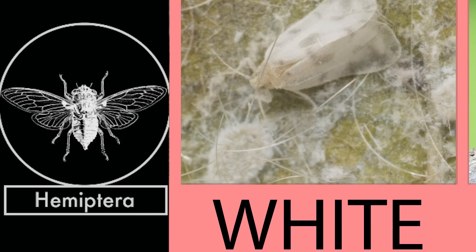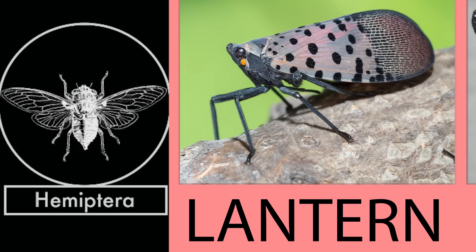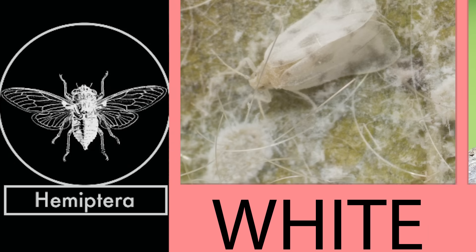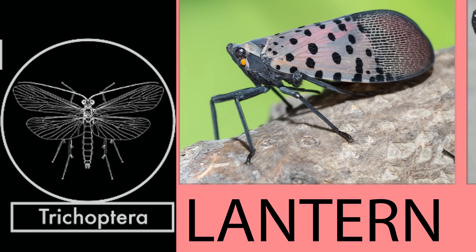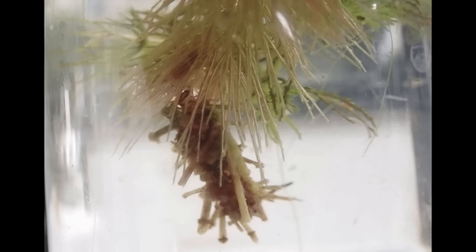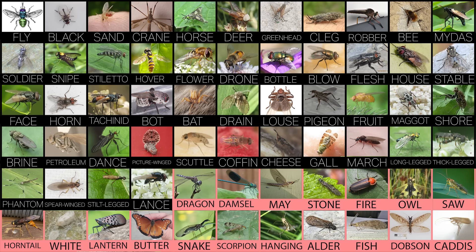The order Hemiptera contains cicadas, stink bugs, aphids, and others, distinguished by a specific proboscis mouth shape used to consume plant sap or other liquids. In this order are the whiteflies and lanternflies. Whiteflies are aphid-like animals named for their white powdery appearance — despite the name, they are true bugs, not flies. The lanternfly is named for a now-discredited belief that some species glowed; the name persists despite being incorrect, and some species are very invasive in the United States. Lastly, the caddisflies: the word 'caddis' likely comes from an old term for woven fabric or ribbon, referencing the larval cases they construct.